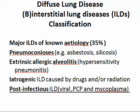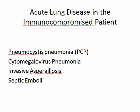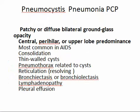The acute group includes PCP, cytomegalovirus, and mycoplasm. Acute lung disease in the immunocompromised patient also includes invasive aspergillosis and septic emboli. Most of these share the presence of bilateral patchy, but more commonly diffuse ground glass appearance.